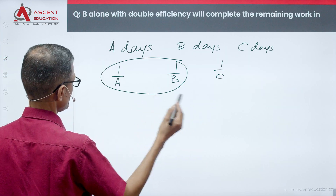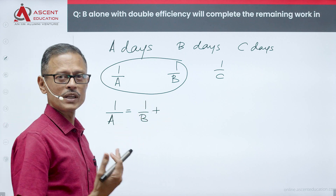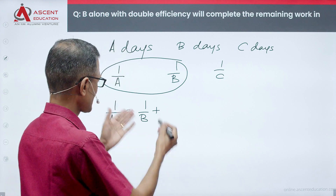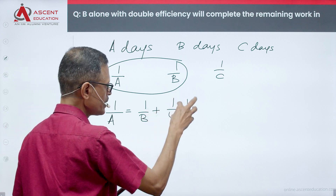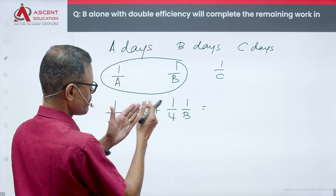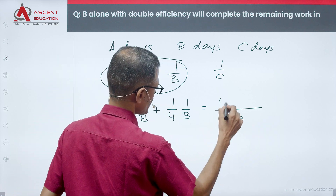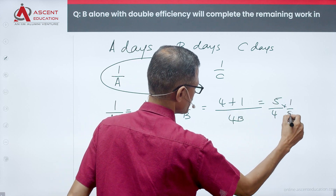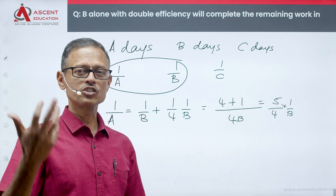A is 25% more efficient than B. So the work done by A in one day is 25% more than B's work per day. 25% is 1/4, so 1/A = 1/B + (1/4)·(1/B) = (1 + 1/4)·(1/B) = (5/4)·(1/B). Therefore, 1/A = (5/4)·(1/B).